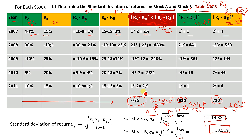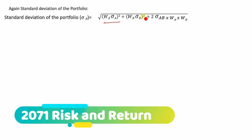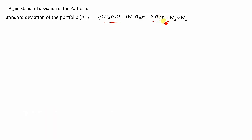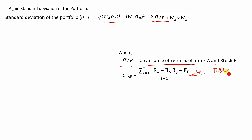Stock A standard deviation is 14.32% and Stock B is 13.51%. The standard deviation of the portfolio formula is: square root of (W_A squared × σ_A squared) plus (W_B squared × σ_B squared) plus 2 × σ_AB × W_A × W_B. σ_AB is the covariance of returns of Stock A and Stock B. The covariance formula is the summation of (R_A minus expected return) multiplied by (R_B minus expected return), divided by n minus 1.